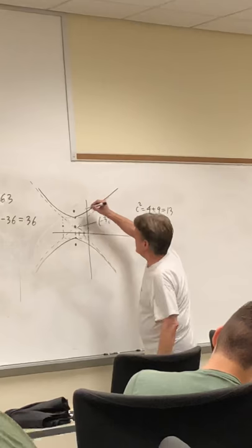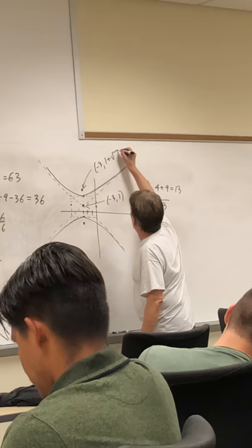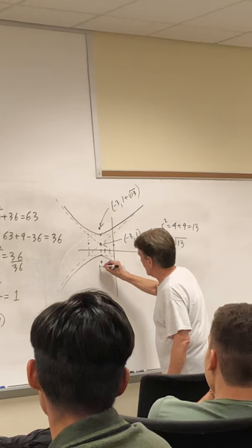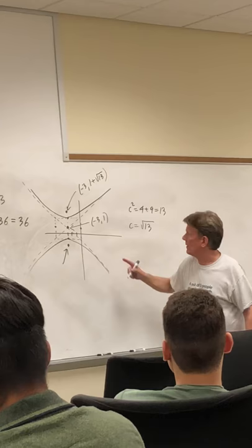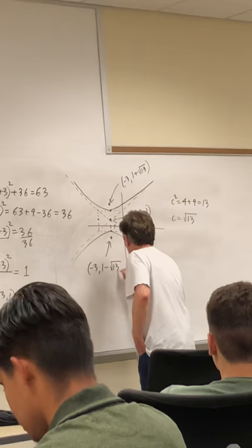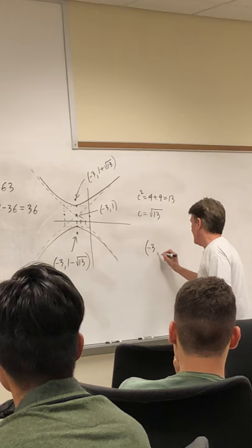So to get to the upper focus we add the square root of 13. So this one is going to be negative three, one plus the square root of 13. And to get that focus you're going to subtract the square root of 13. Or you can do it plus or minus, so negative three, one plus or minus the square root of 13. Those are the two points.